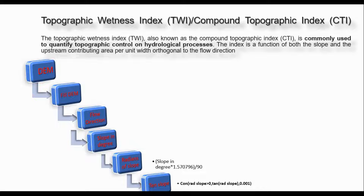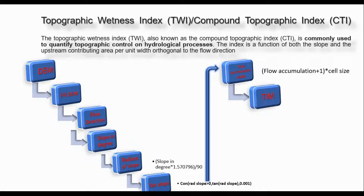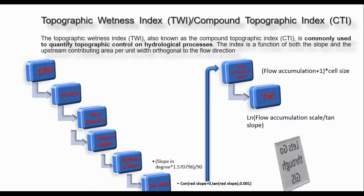You also need to prepare the slope map in degree format. In this video I am going to prepare the slope map and then convert it into radian format using a conversion formula, and then convert it into a tangent slope format. To prepare the tan slope map we use the conditional operator. After that I will prepare the flow accumulation scale map, and finally prepare the Topographic Wetness Index map using the logarithm of the flow accumulation scale divided by the tan slope map.